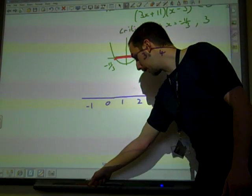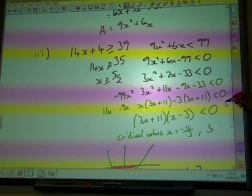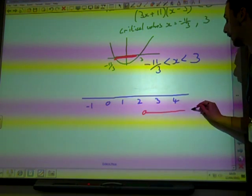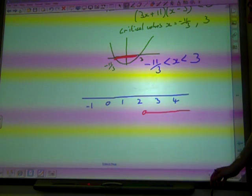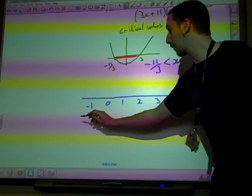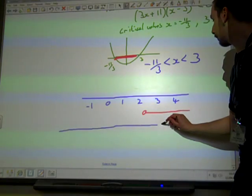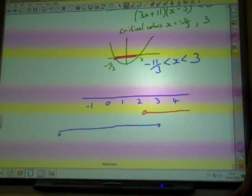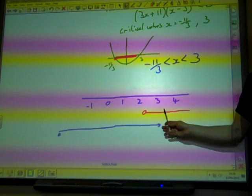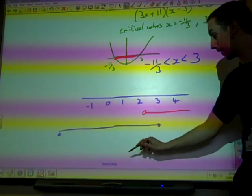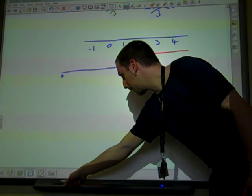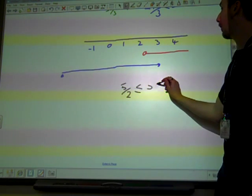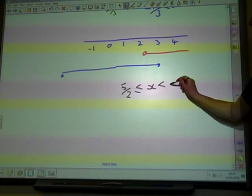Well, with the first inequality, X was bigger than or equal to 2 and a half. The other inequality said X was between minus 11 over 3, which is down here somewhere, and 3. And so actually, the only bit that it can be both in is that small area there that's quite limited. We end up concluding that X has to be greater than or equal to 2 and a half and less than 3.